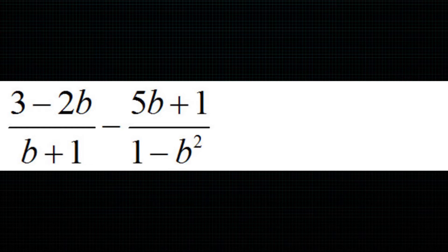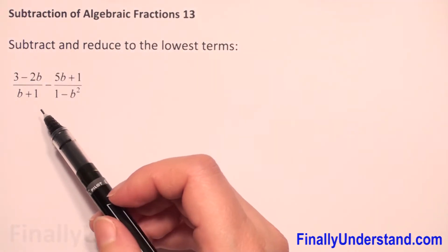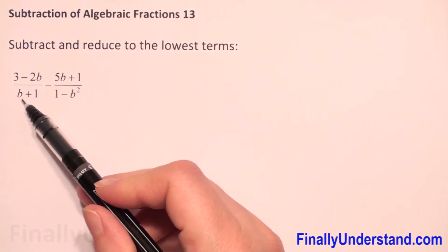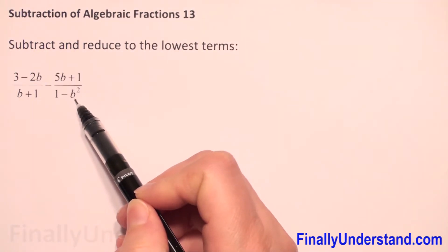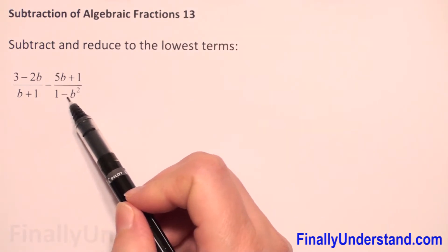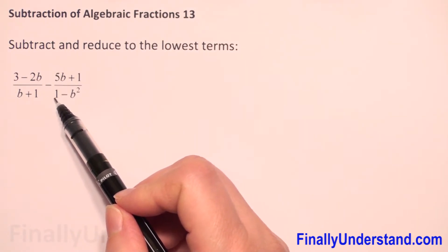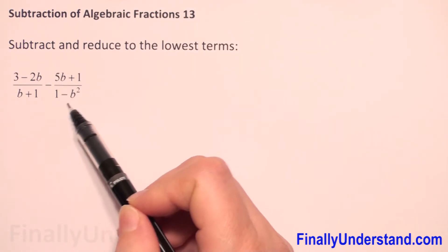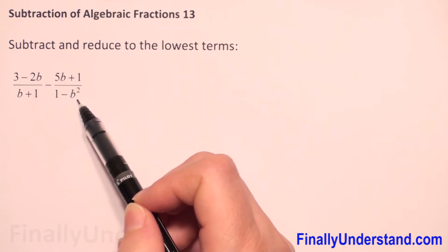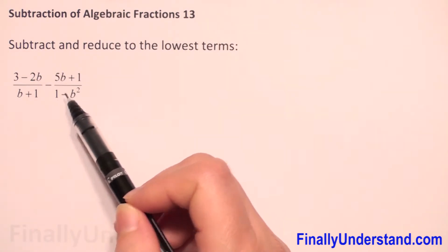To subtract algebraic fractions we need to have the same denominator. So let's check our denominators. We have b plus one and we have one minus b squared. We can rewrite one as one squared, so we will have the difference of two perfect squares in the second denominator.